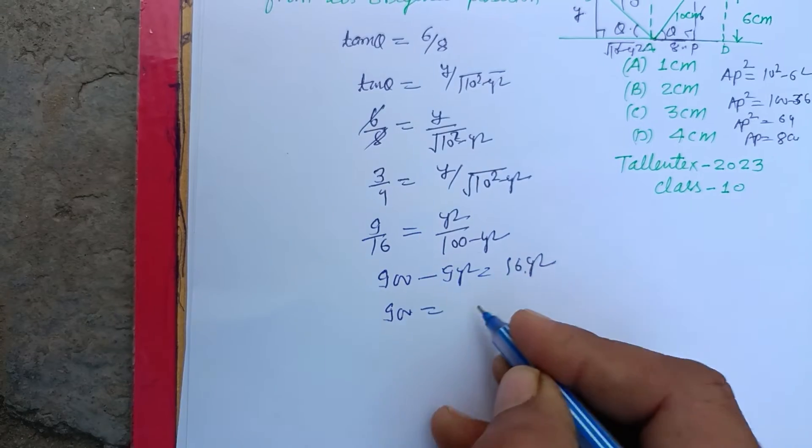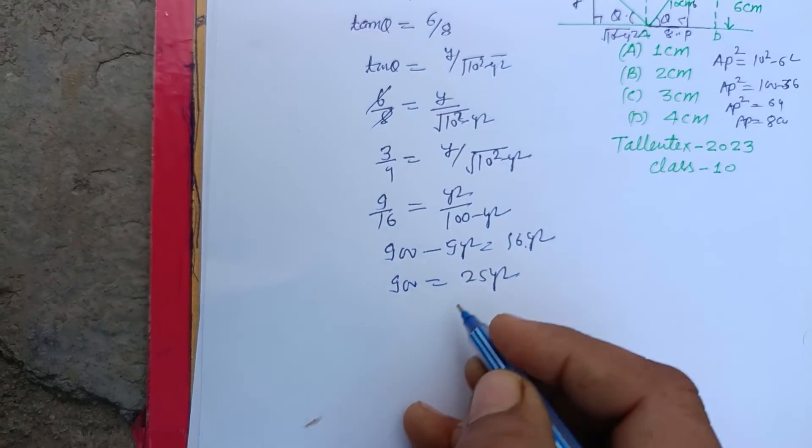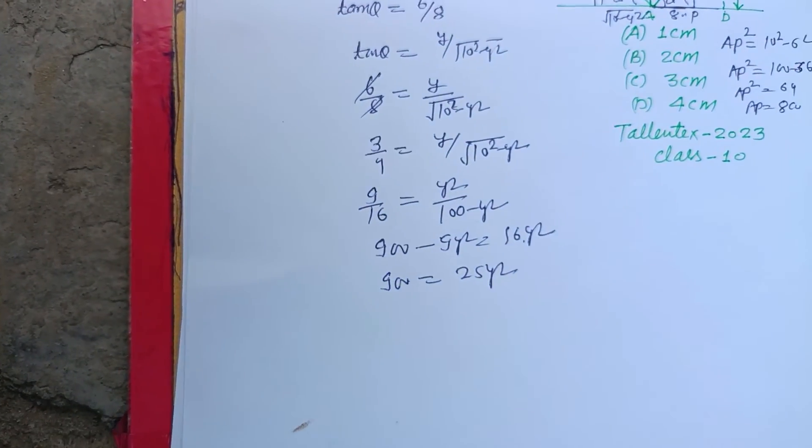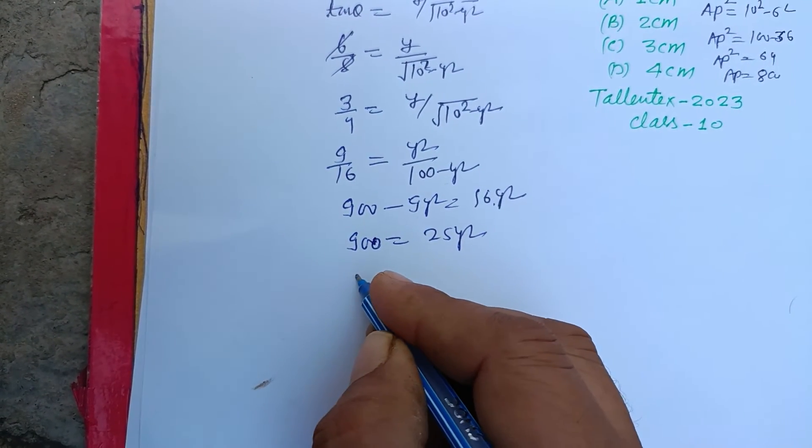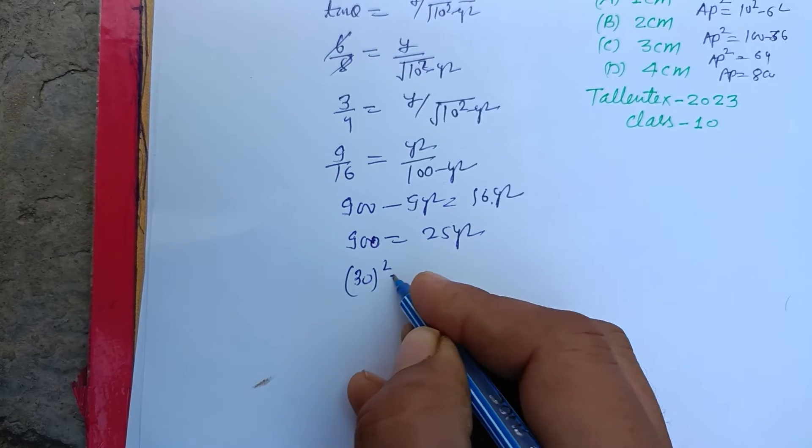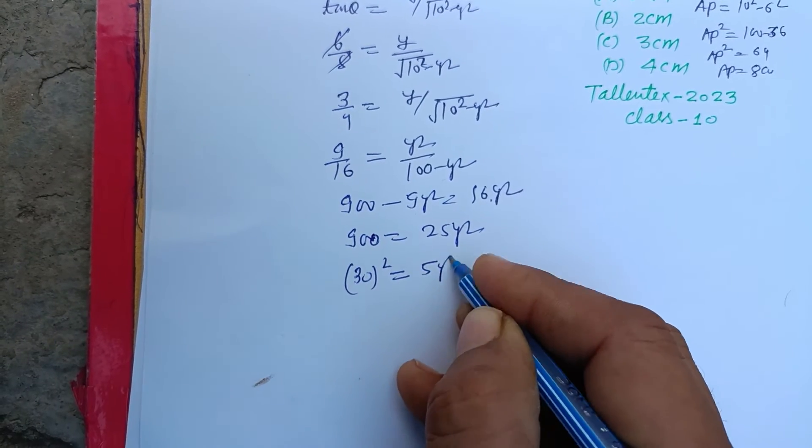So 900 equals 16 plus 9, that's 25Y square. Taking square root both sides, this is 30 square and this is 5Y square.